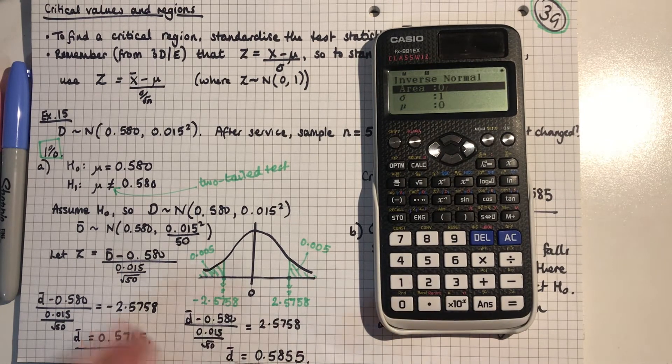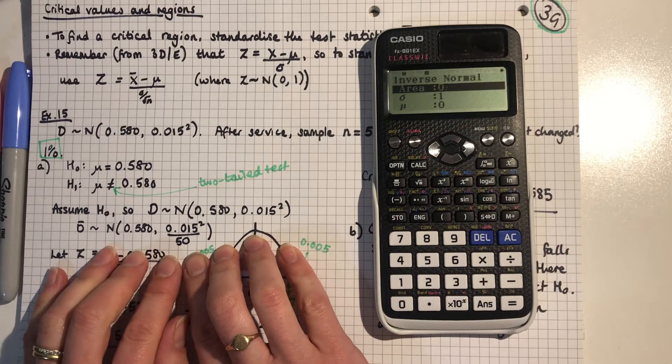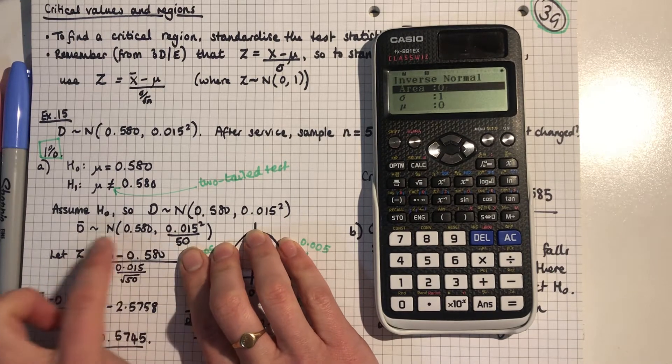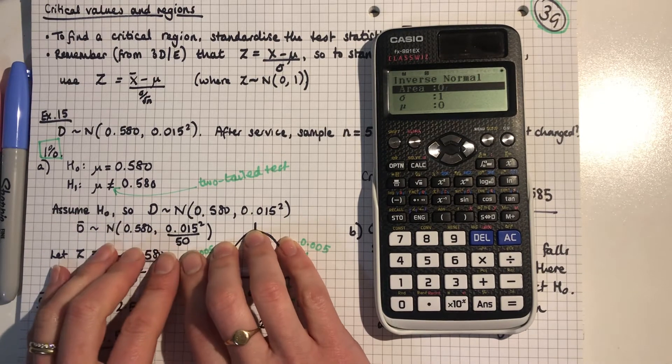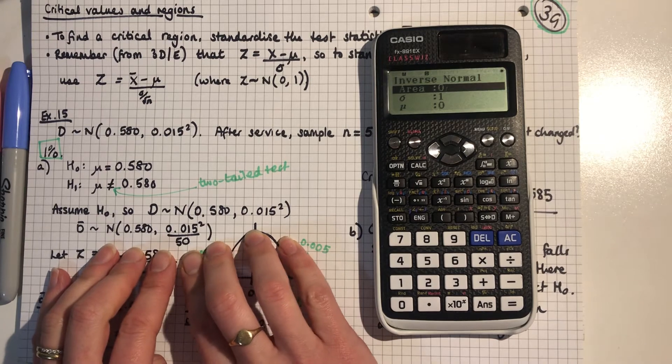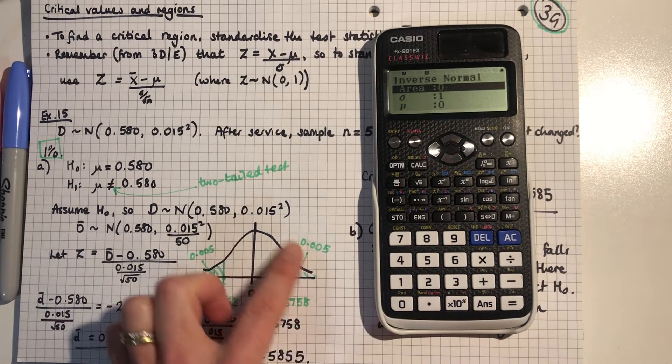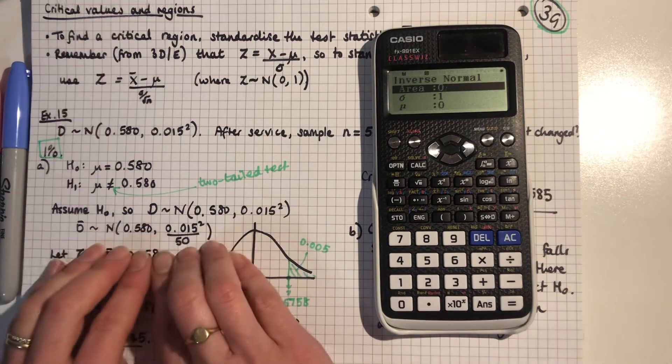Imagine for a second that I haven't done the standardization here and instead I'm sticking with this here for D bar. And I want to know what value, not on the standard normal distribution, but on this distribution.